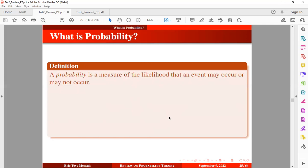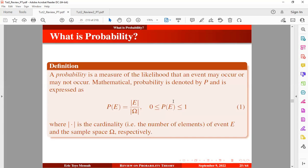Probability is a measure of the likelihood that an event may occur or may not occur. Mathematically, we can denote probability by the capital letter P and express it as shown in equation one. I can interpret equation one as the probability of observing event E equals the cardinality of event E divided by the cardinality of the sample space, where we know what cardinality means from our previous tutorial.